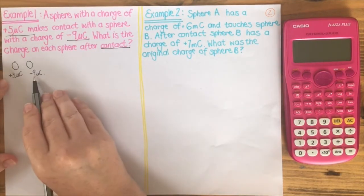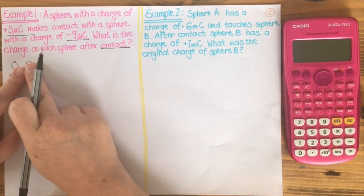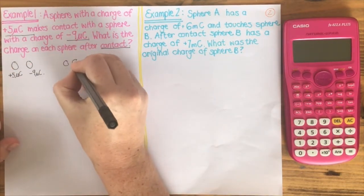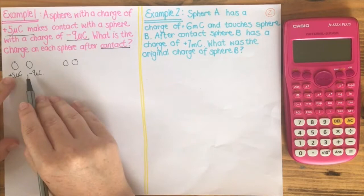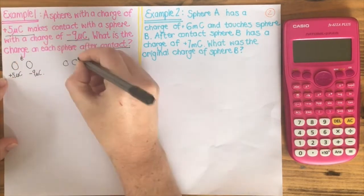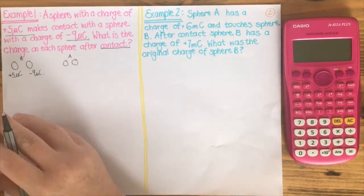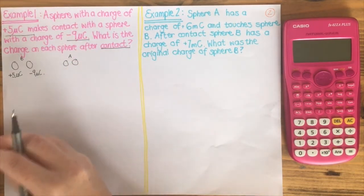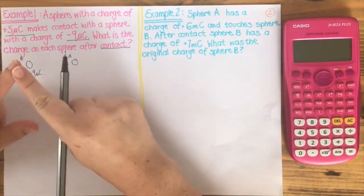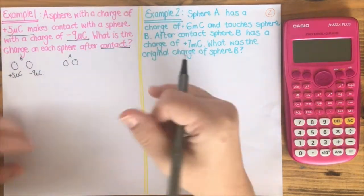Positive 5 microcoulombs and minus 9 microcoulombs — we know that they're going to make contact and then move apart from each other. After that, we know that they will both have the same charge. This is before and this is after. They'll both have the same charge because like charges repel, and the electrons specifically are going to disperse as far away from each other as possible.